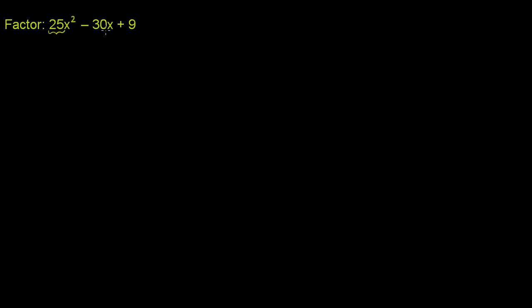Both 25 and 30 are divisible by 5, but 9 isn't divisible by 5. So we could factor this by grouping, but if we look a little bit more carefully here, we see something interesting. 25 is a perfect square, and 25x squared is a perfect square. It's the square of 5x.